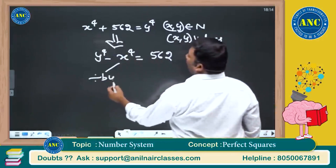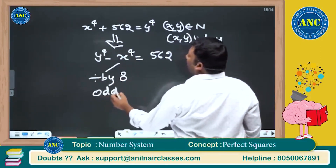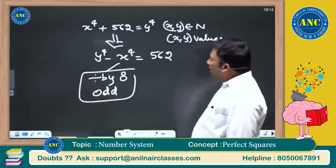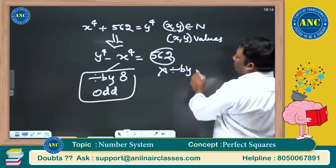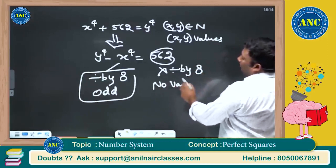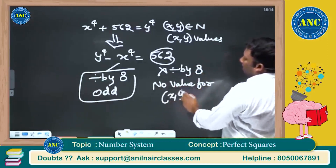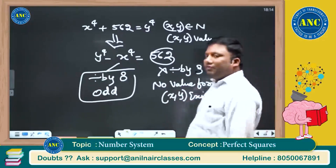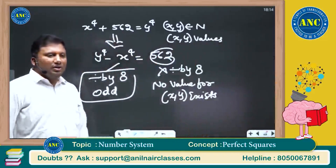The right-hand side must be divisible by 8 or be an odd number. Since 562 is not divisible by 8, the answer is: no value for x, y exists which satisfies this equation.